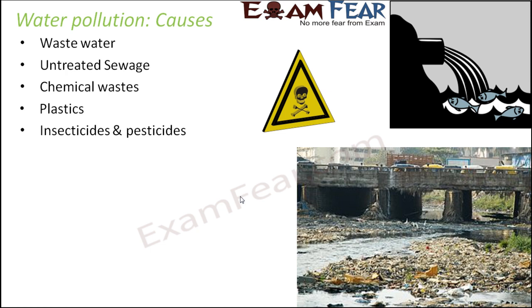Use of insecticides and pesticides is another cause. Just to increase crop yield, farmers use excessive insecticides and pesticides to kill insects or pests that might spoil the plant. When used in excess, with rain, the insecticides and pesticides get washed away with rainwater and discharged into nearby water bodies like rivers or lakes. These are very strong harmful chemicals — powerful enough to kill insects and pests — and they pollute the water bodies.